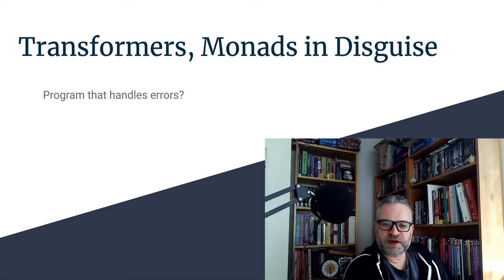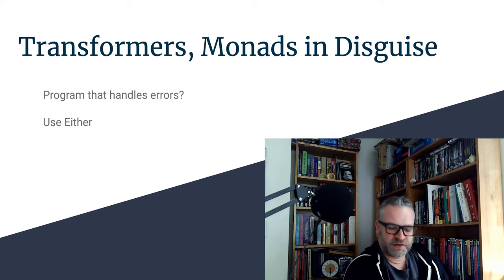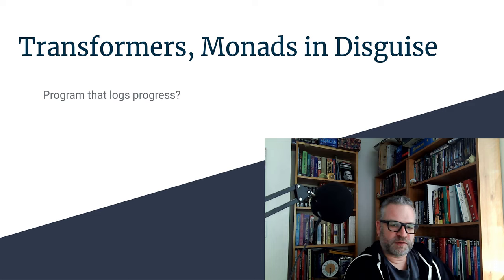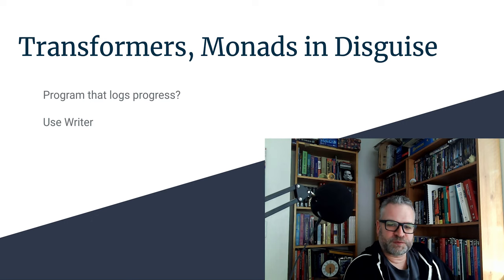Your starting point is: let's say you have a program that handles errors. You're going to use the Either monad — if you go back to one of my earlier videos, I'm talking about the expression evaluator program and it uses Either as the data type so that we can handle errors. And then you might have a program that logs its progress. Each step of the program you want to have a log of what it's doing, maybe for debugging purposes or for auditing purposes, or maybe part of your calculation is an accumulated list of values.